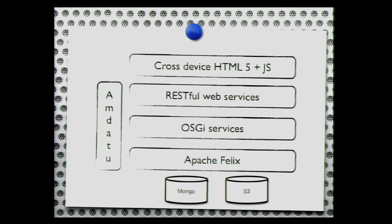We run on top of Apache Felix — we could run on any kind of OSGI container, but we use Felix. For storage, we use Mongo for most of our storage, and for binary file storage we use Amazon S3, because that's where we run. On the left there's also Amdatu, which is a platform or framework we are working on — open source. There we work on OSGI components which make it easier to create cloud-like applications. We have, for example, support for multi-tenancy, support for using MongoDB in an OSGI world, and support for RESTful web services using JAX-RS. All that kind of stuff is in Amdatu and that's free for everyone to use.